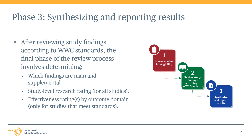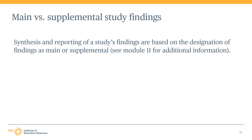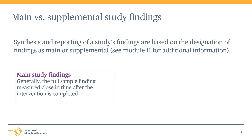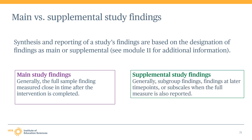For those studies that meet standards, the WWC also determines an effectiveness rating based on the evidence of favorable effects from the intervention. The WWC's synthesis and reporting of a study's results is also based on the designation of findings as either main or supplemental. Main study findings are those that must be reviewed as part of the study review process and tend to be the full sample finding measured closest in time after the intervention is completed, whereas supplemental study findings are only observed if specified in the study review protocol, if needed to construct a main finding in an outcome domain, or if needed for the purpose of the review. These findings tend to be subgroup findings, findings from time points later than the primary finding, or subscales when the full measure is also reported.